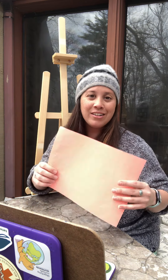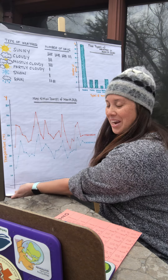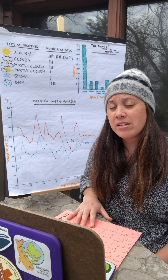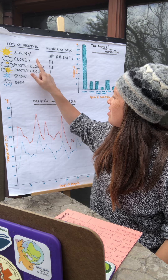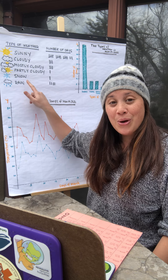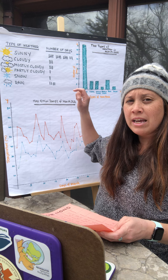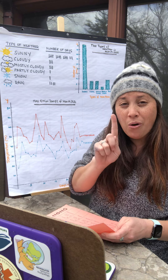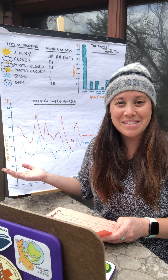Now the fun part — graphing it! I looked at the data and figured out a few ways to graph this information. For lower elementary, I used the type of weather I recorded: sunny, cloudy, mostly cloudy, partly cloudy, snow, and rain. I counted how many days in the month of March experienced each type of weather. It looks like partly cloudy and snow each had one day, and there were 18 days of sun, so March was a very sunny month.